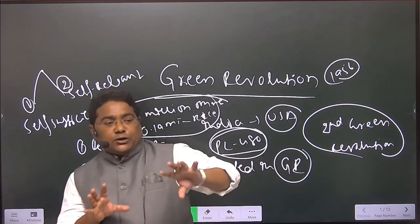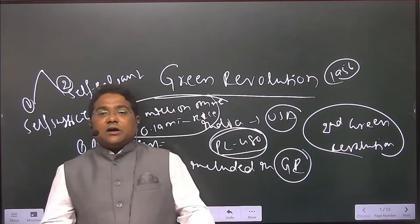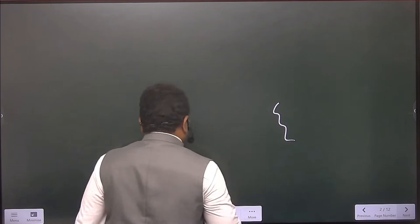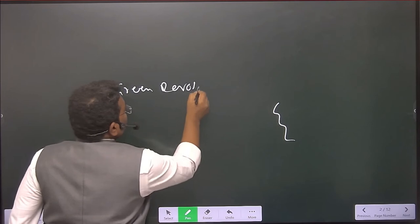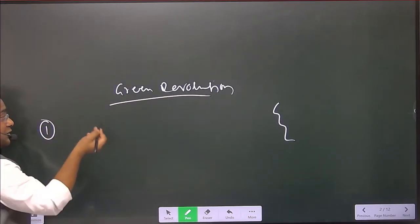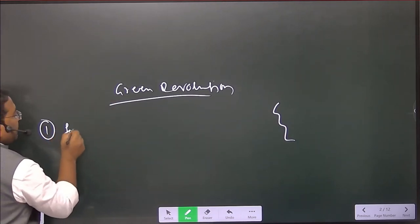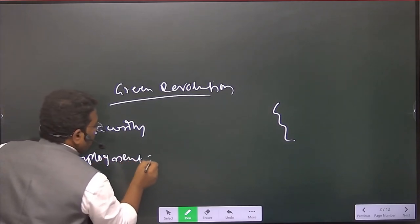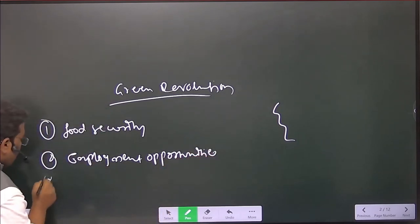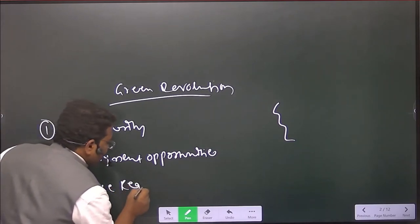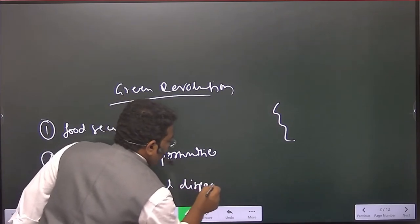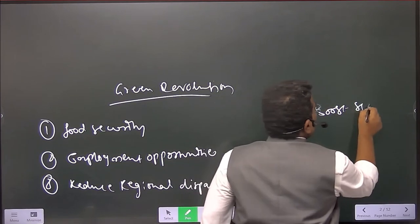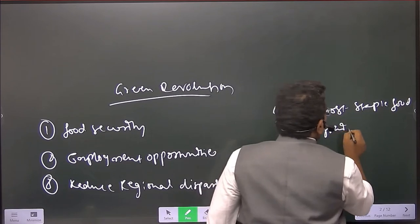The purpose of the green revolution was: to increase food security of the country, to reduce malnutrition and under-nourishment, to increase employment opportunities, and to boost food grains in the country. The factors that led to starting the green revolution were: food security, employment opportunities, reducing regional disparities, and boosting staple food grains in the country.